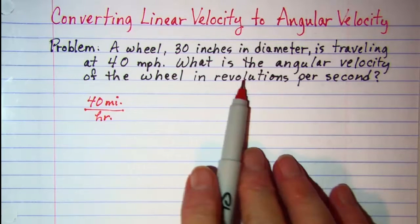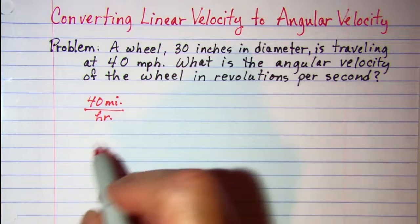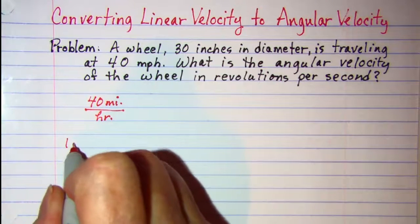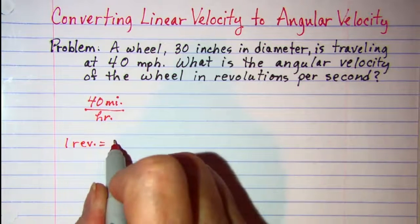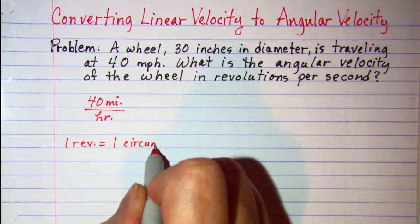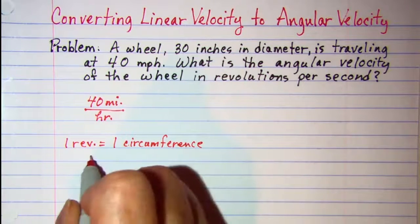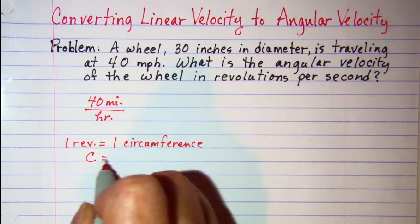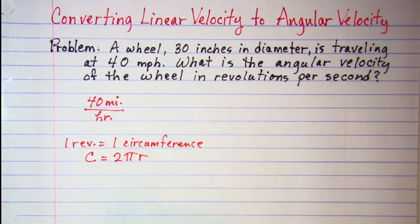Now we're wanting to go to revolutions per second. And we know that 1 revolution is the same as 1 circumference. And 1 circumference is equal to 2 pi times the radius.